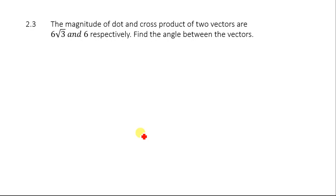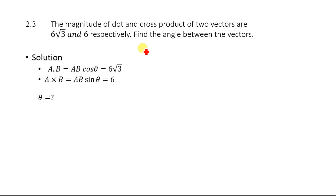Problem 2.3: The magnitudes of the dot product and cross product of two vectors are 6 root 3 and 6 respectively. Find the angle between the vectors. We know that A·B = AB cosine theta = 6 root 3, and A×B = AB sine theta = 6.